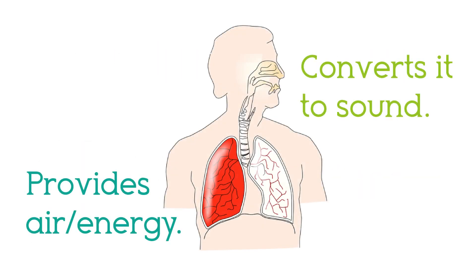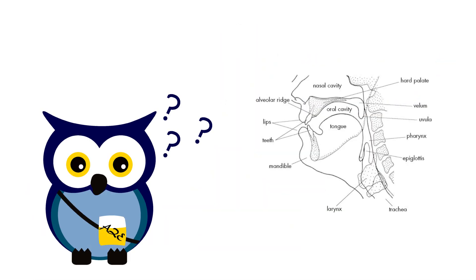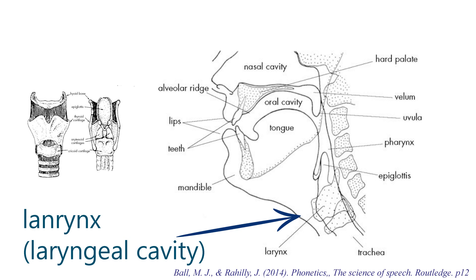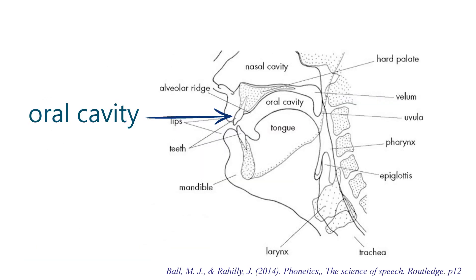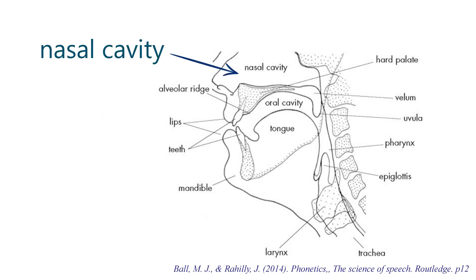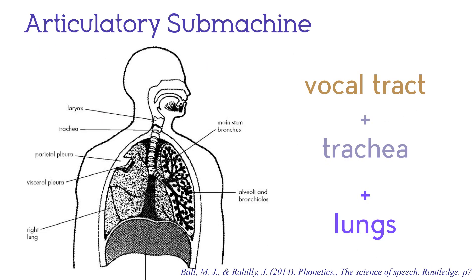The lungs provide the source of aerodynamic energy, and the vocal tract takes it from there. The vocal tract consists of the laryngeal cavity, which contains the larynx, the pharynx, the oral cavity, and the nasal cavity. So the articulatory submachine is the vocal tract plus the lungs, and of course the trachea — the windpipe — which connects the lungs to the vocal tract. That makes three parts.